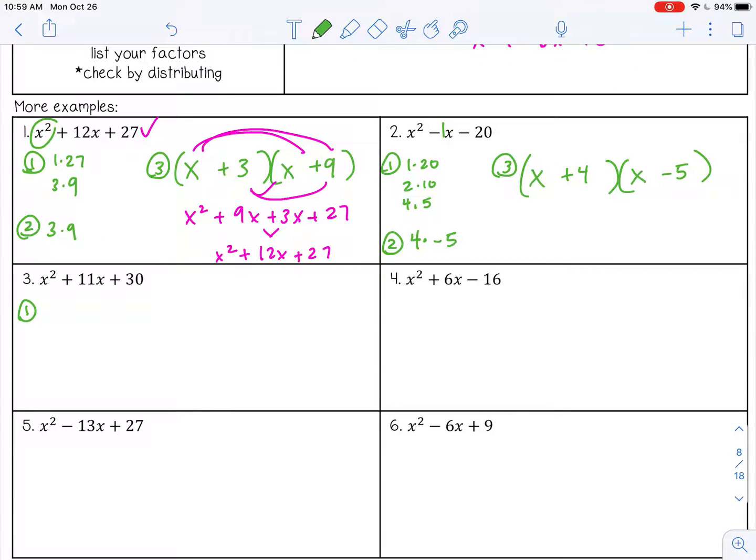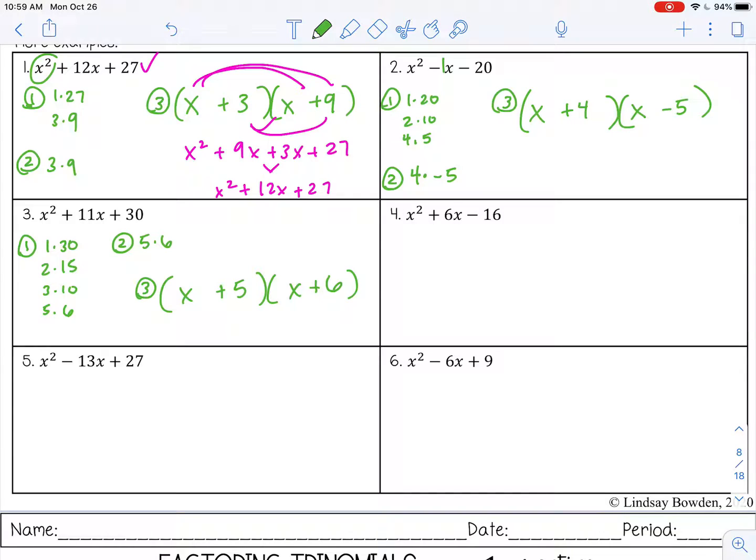Number 3. So the factors of 30, that's 1 and 30, 2 and 15, 3 and 10. 4 won't go into it. 5 and 6. The numbers that will add to give me 11 would be 5 and 6. So x plus 5 and x plus 6.